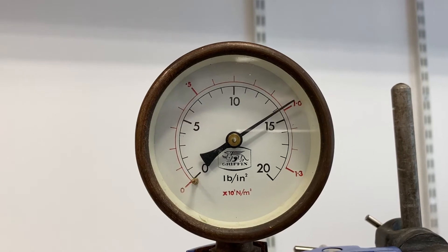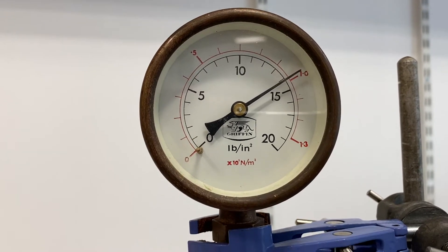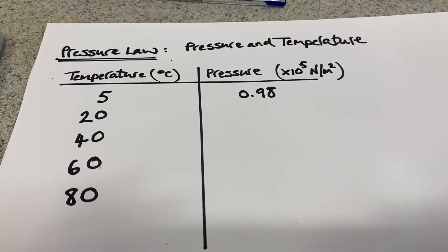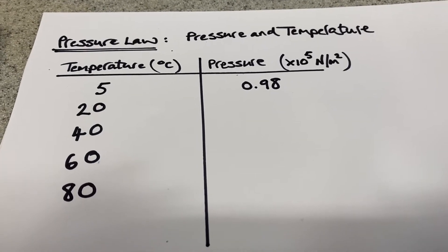So that's about 0.98 times 10 to the 5 newtons per square metre. Remember, newtons per square metre is the same as Pascals.